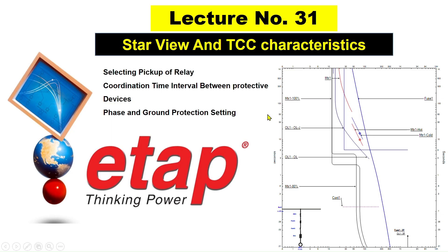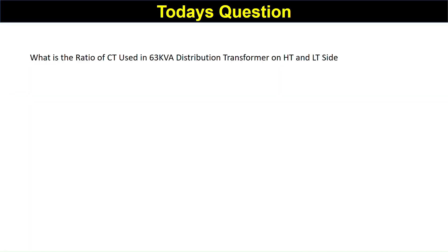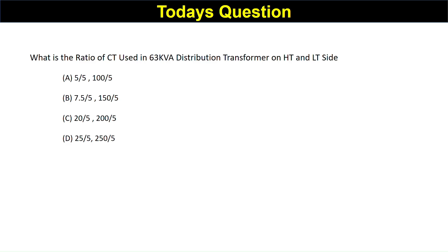Before starting the lecture, I want to ask a small question: What is the ratio of CT used in a 63kV distribution transformer on HV and LT side? Option A: 500/5 and 100/5. Option B: 7.5/5 and 150/5. Option C: 250/5 and 200/5. Option D: 25/5 and 250/5. Select the right answer and put it in the comments — I can pin and like the correct answer.